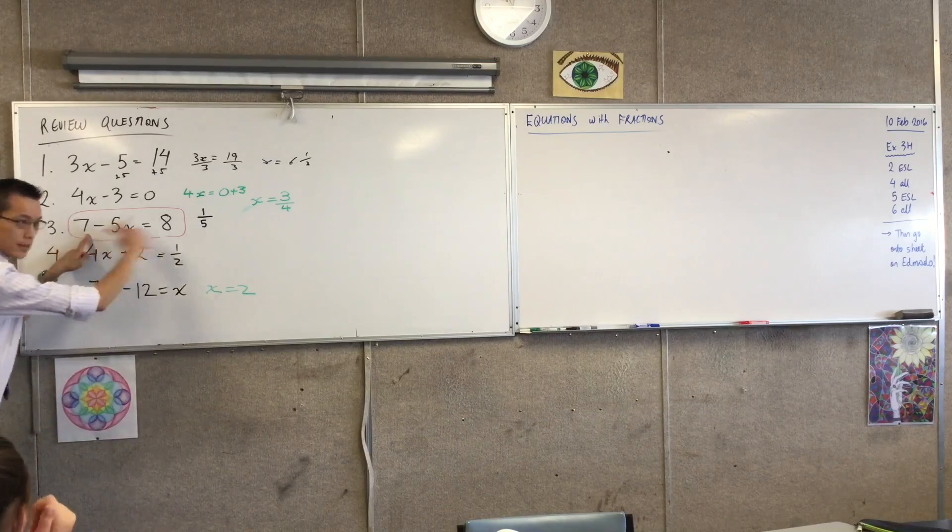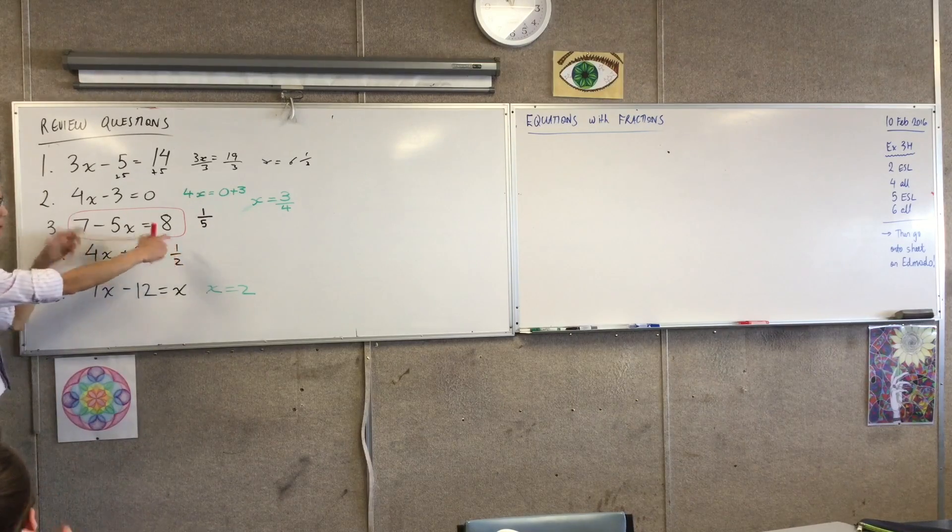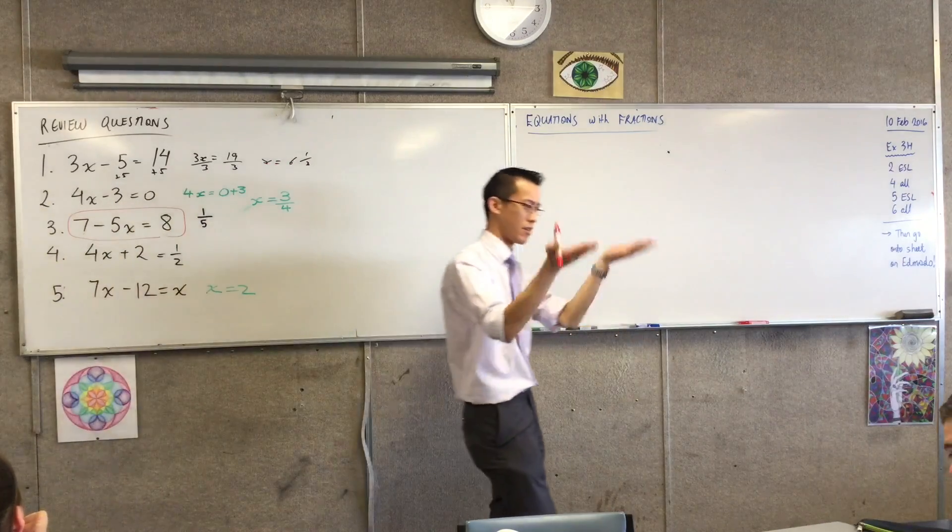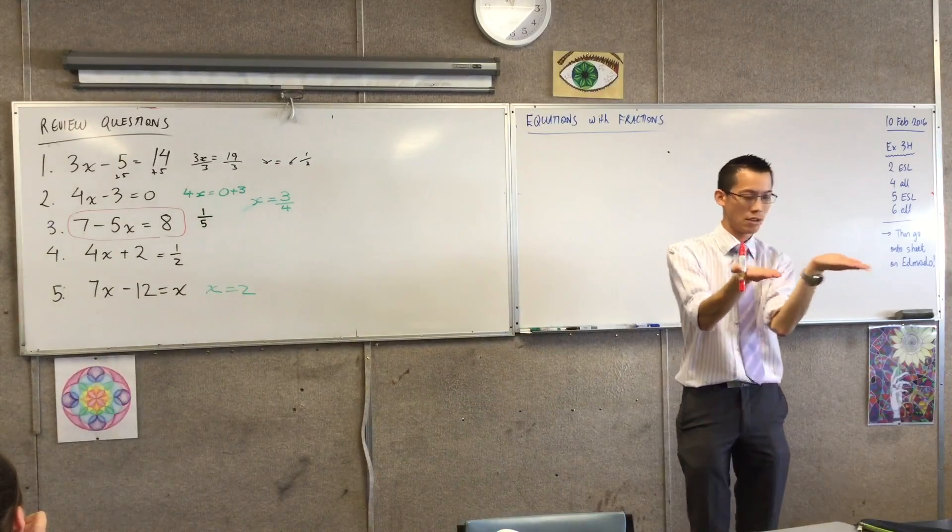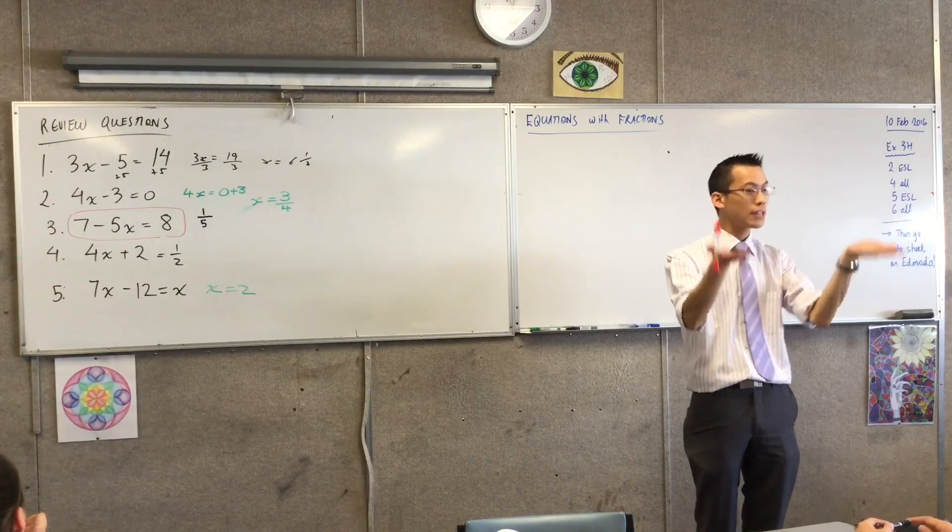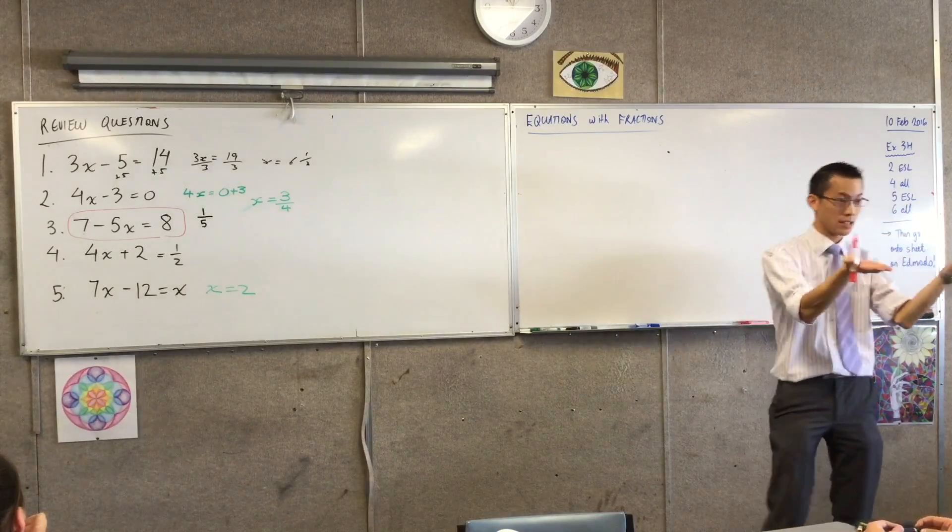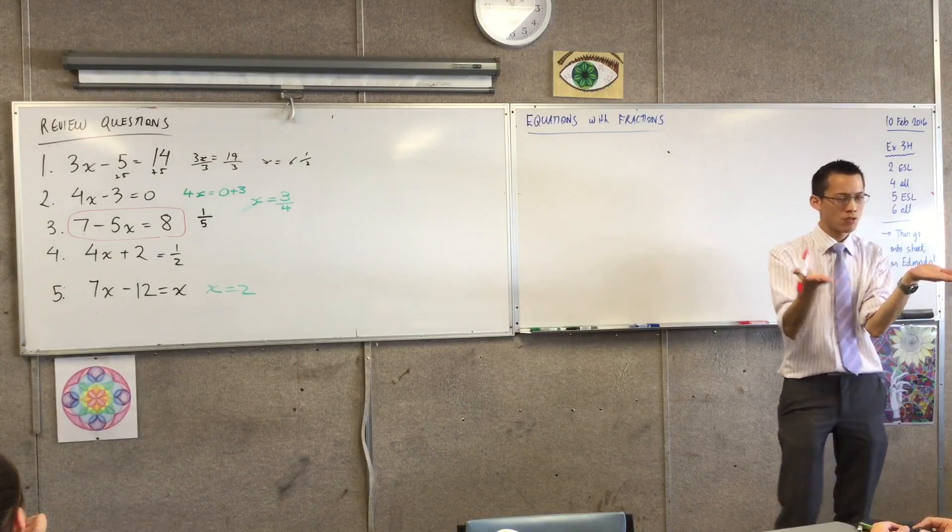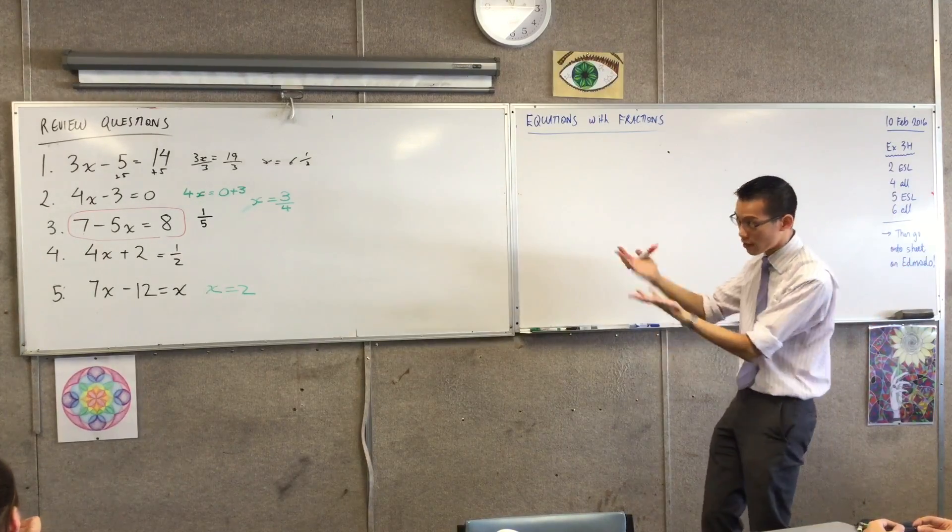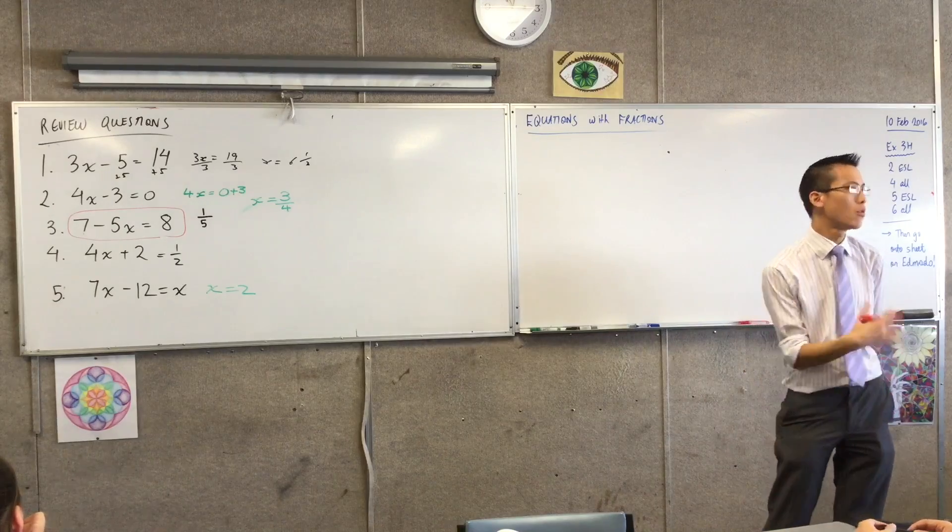Rather than thinking about moving this guy over, being that this is an equation, this is a statement that says this thing and this thing are the same. They're equal, they're identical, they have the same value. Being that you've got that picture in your head, you should think about doing the same thing to both sides because they're both the same. Try to think less about moving things here and there, it's very confusing and you could end up with something wrong and you don't know why.